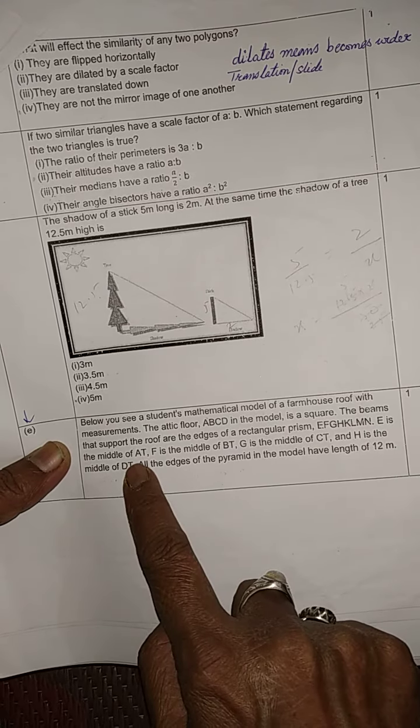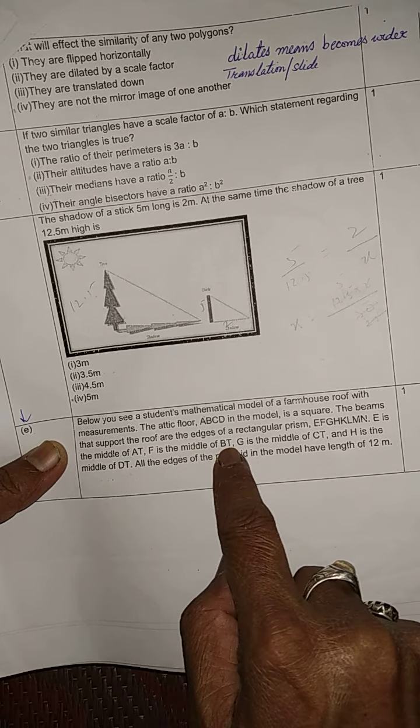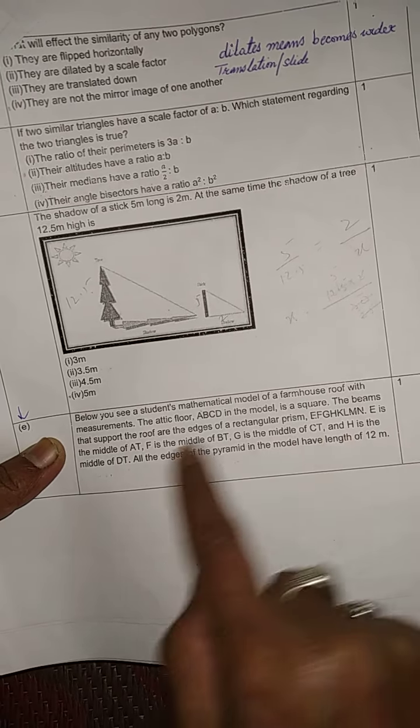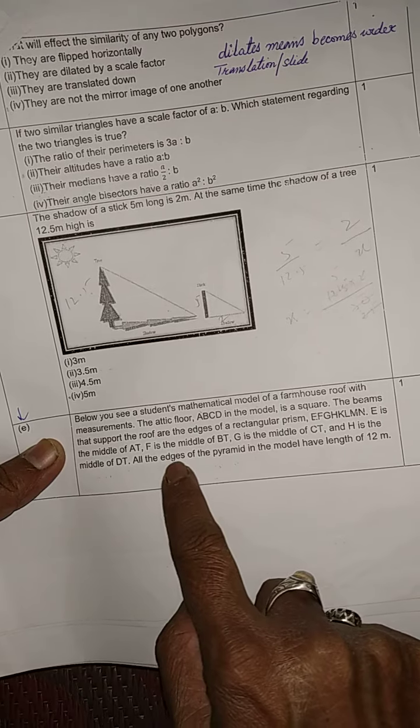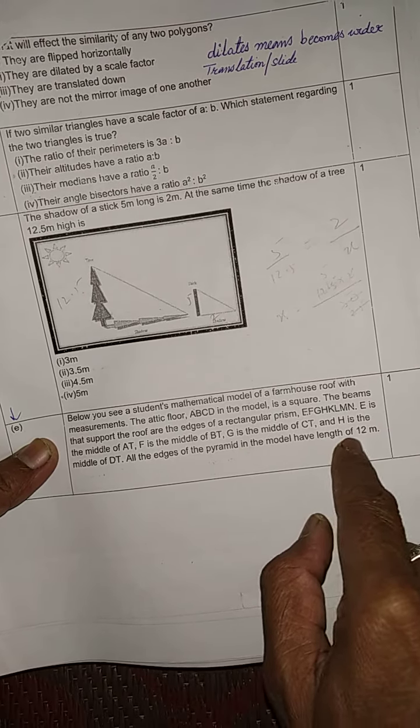E is the middle of AT, F is the midpoint of BT, G is the middle of CT, and H is the middle of DT. All the edges of the pyramid in the model have length of 12 meters.